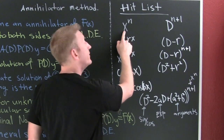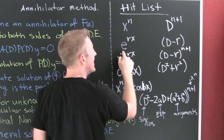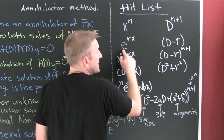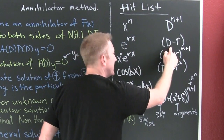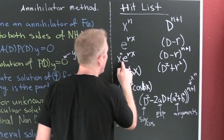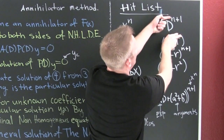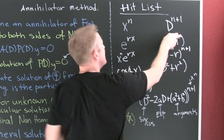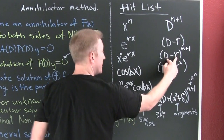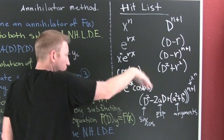Let's talk about our hit list — who kills what. If the right-hand side has a polynomial, the operator D^(n+1) is going to kill it. If you have an exponential e^(rx) on the right-hand side, the operator (D − r) kills it. If you have a combination — a product of those two — then one more derivative of that annihilates it, so you use a combination of those two annihilators.